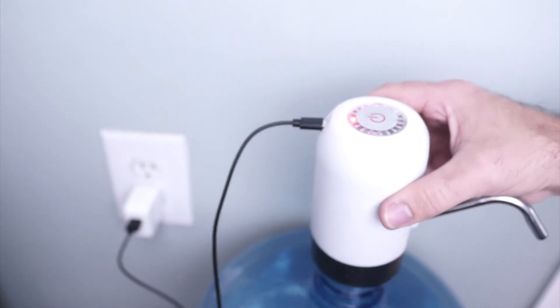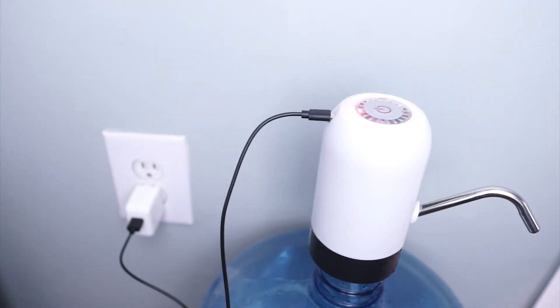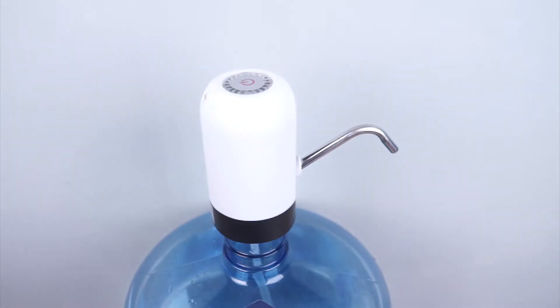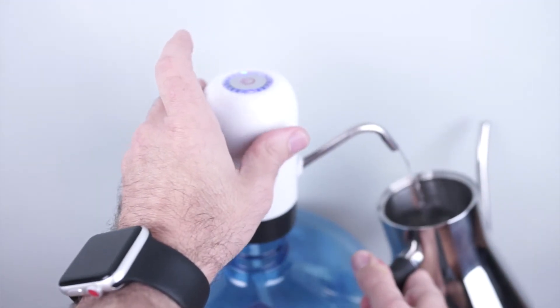After the power is charged, it is ready to use, and it is time to fill your kettle or coffee brewer. Simply press the on-off button on the top of the pump and the water will flow from your jug to your kettle.